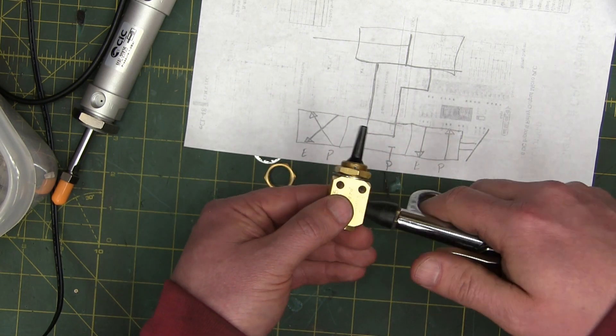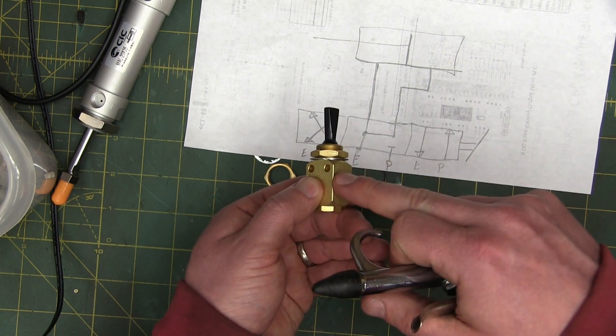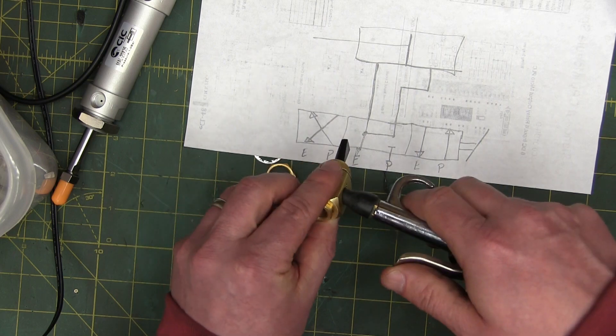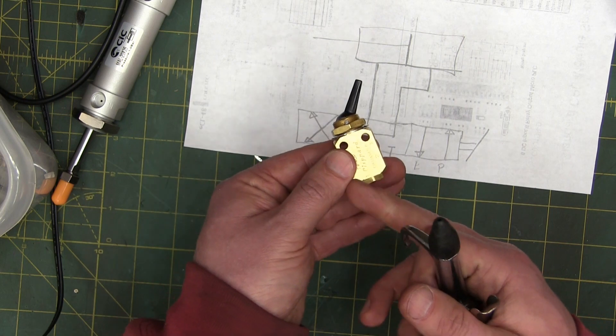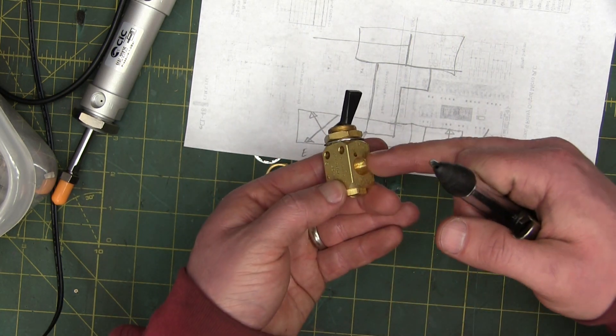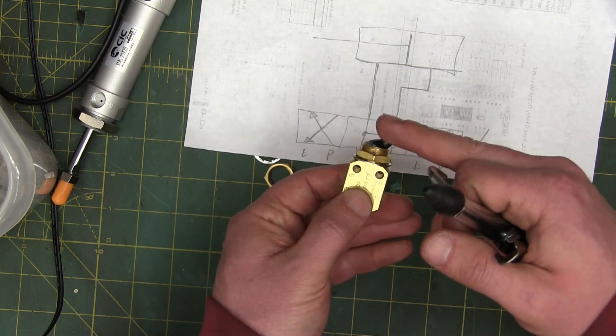Blow in the bottom with it in the center position, blocked right off. These ports go to the exhaust. You blast air in here, comes out the exhaust. You blast air in here, comes out the exhaust. You switch it over, air goes in the bottom, out here, and air from in here comes out the exhaust, but it does not come out the exhaust on this side.